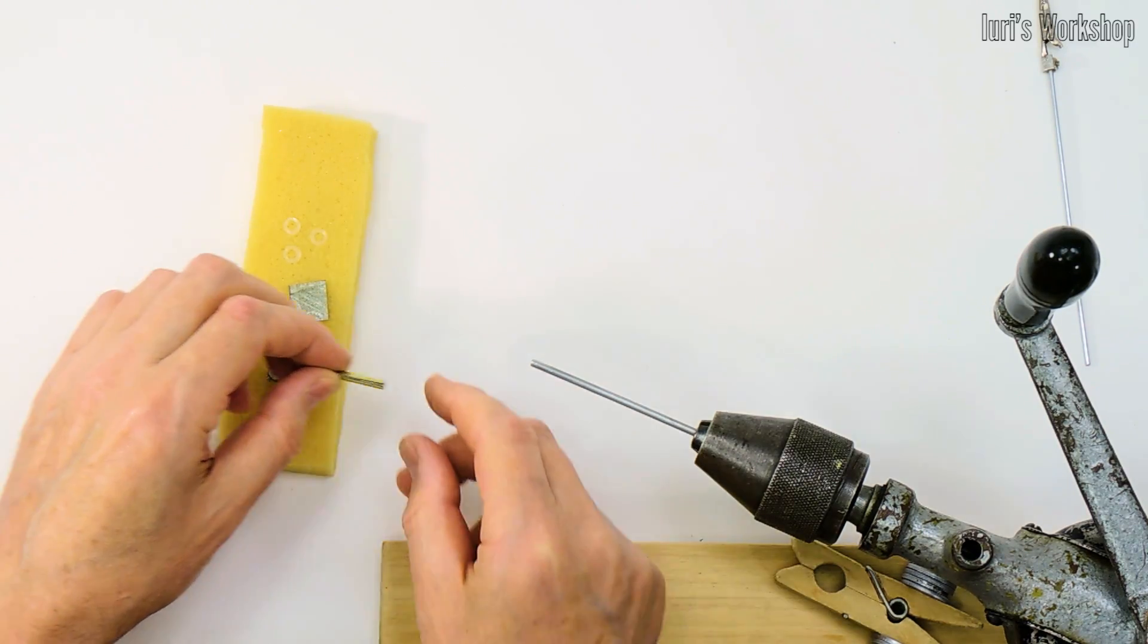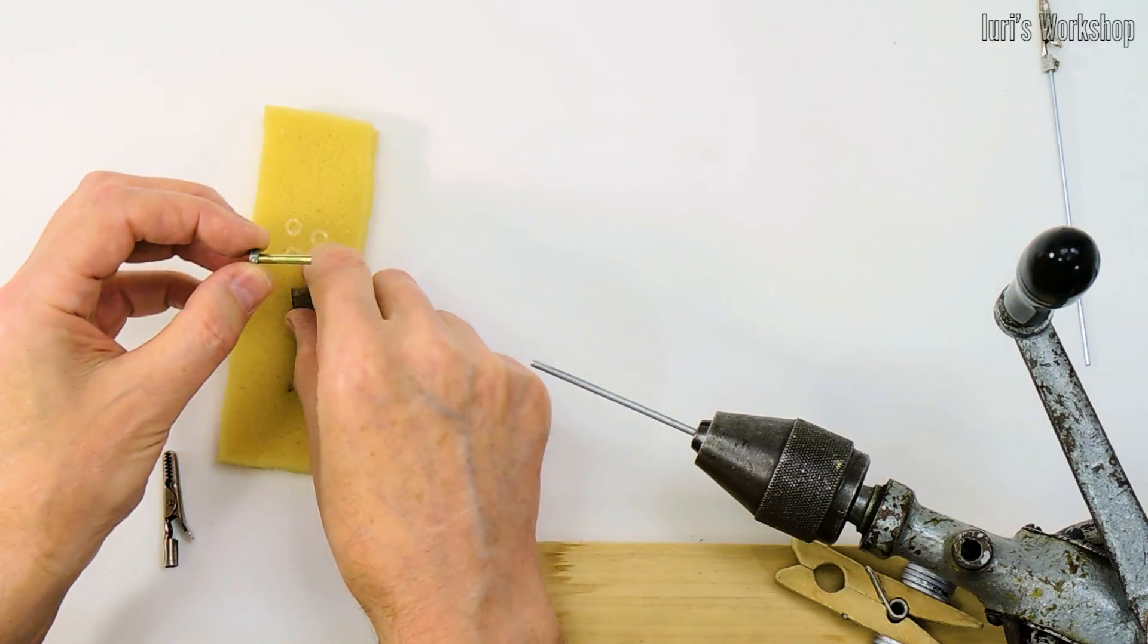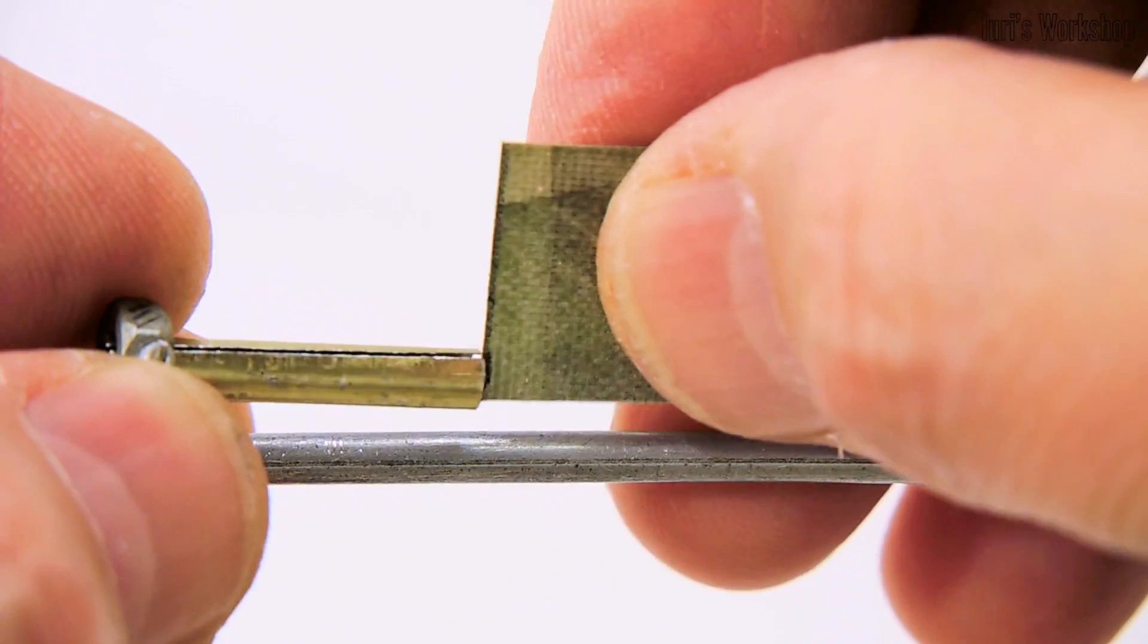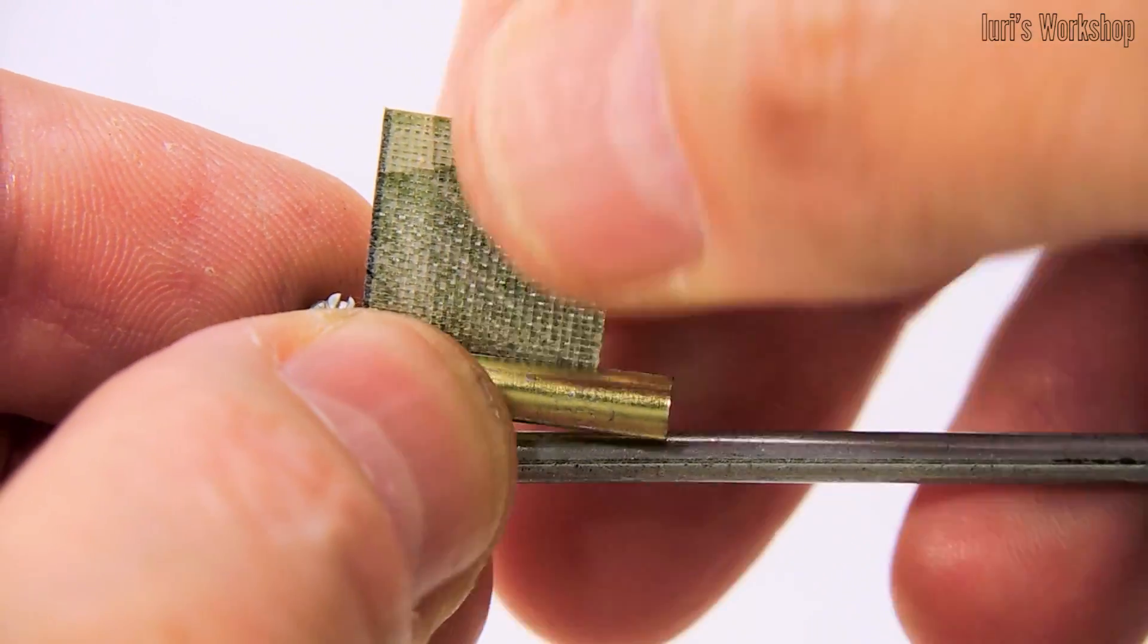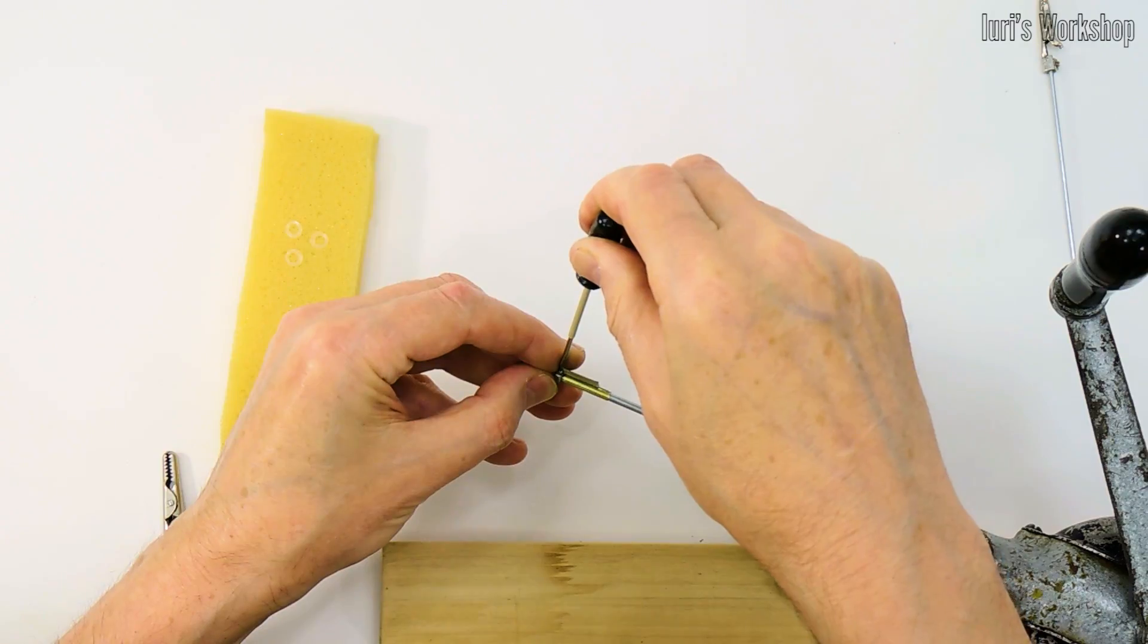Let's start assembling the heating element. To isolate the nichrome coil from the soldering iron body, I used myconite. Instead of myconite, you can use a thin plate of mica, pre-glued to the fiberglass.